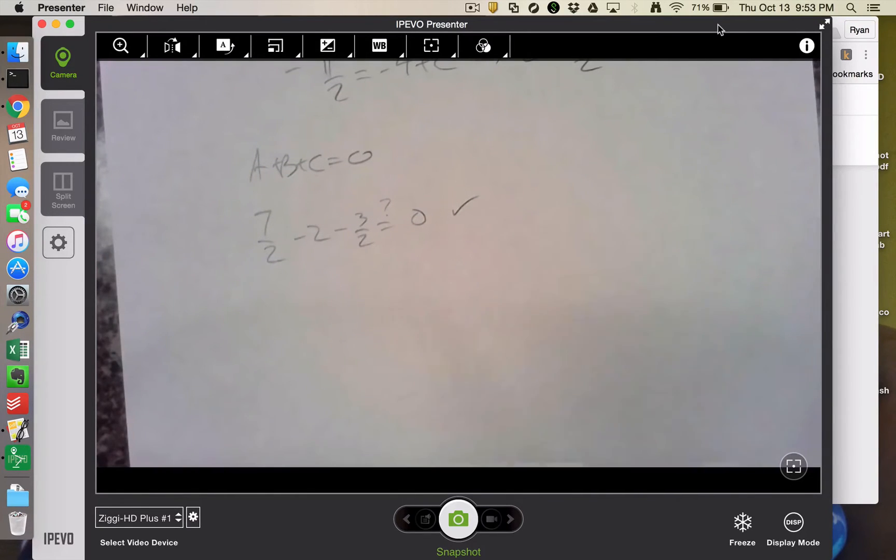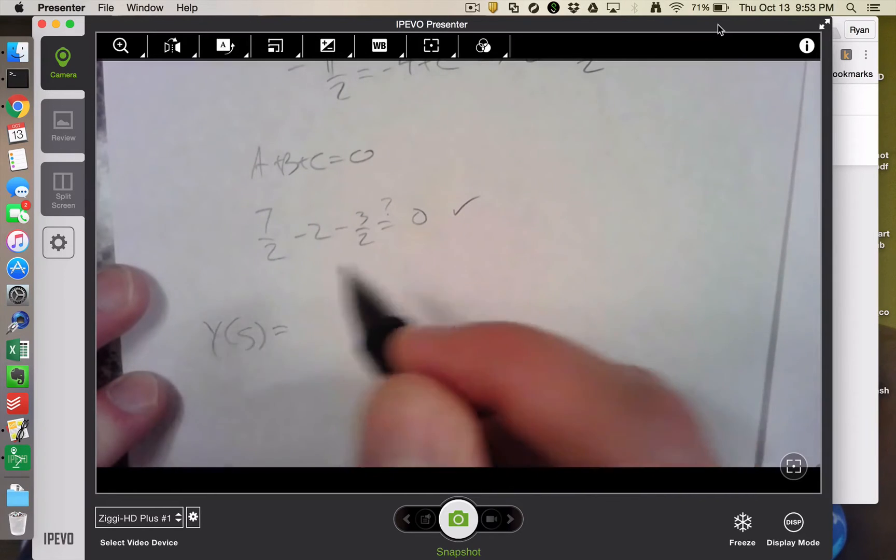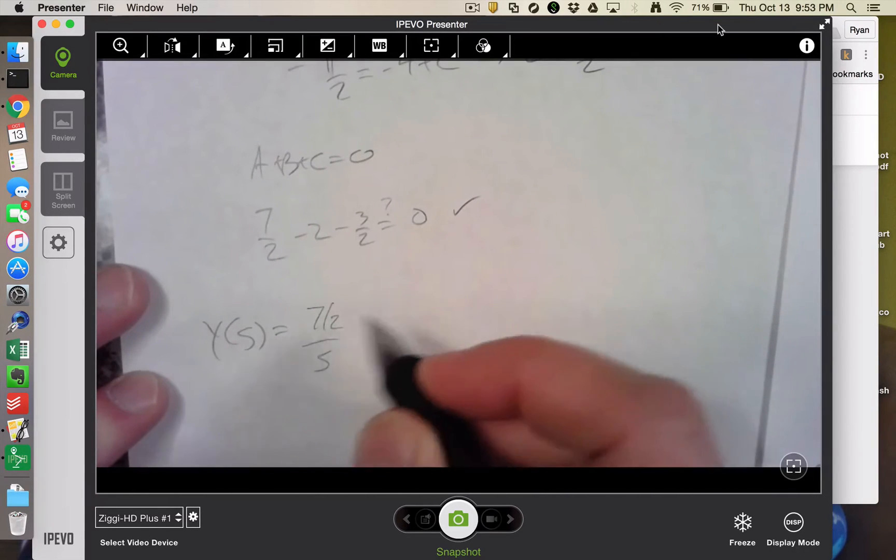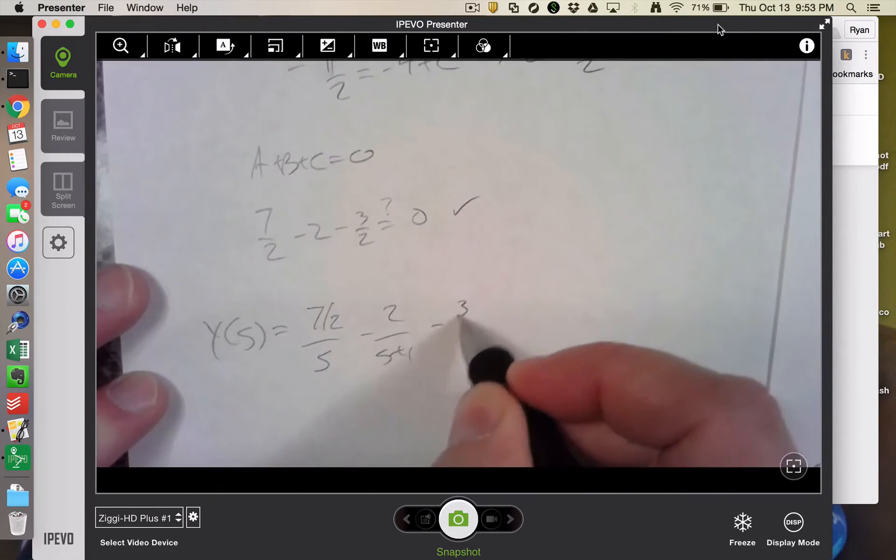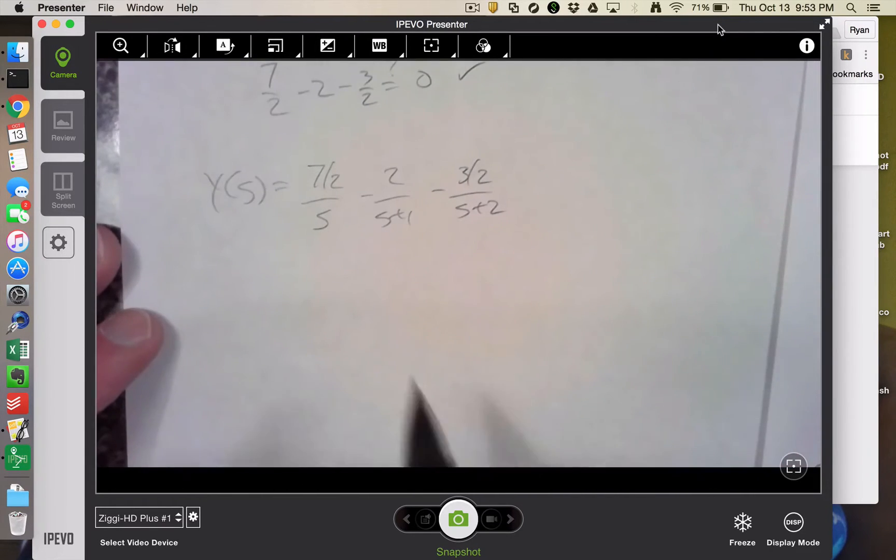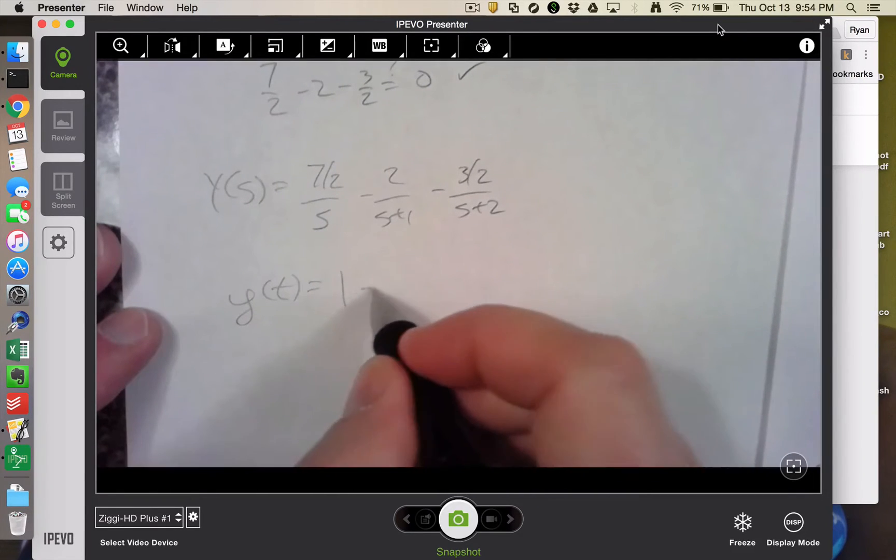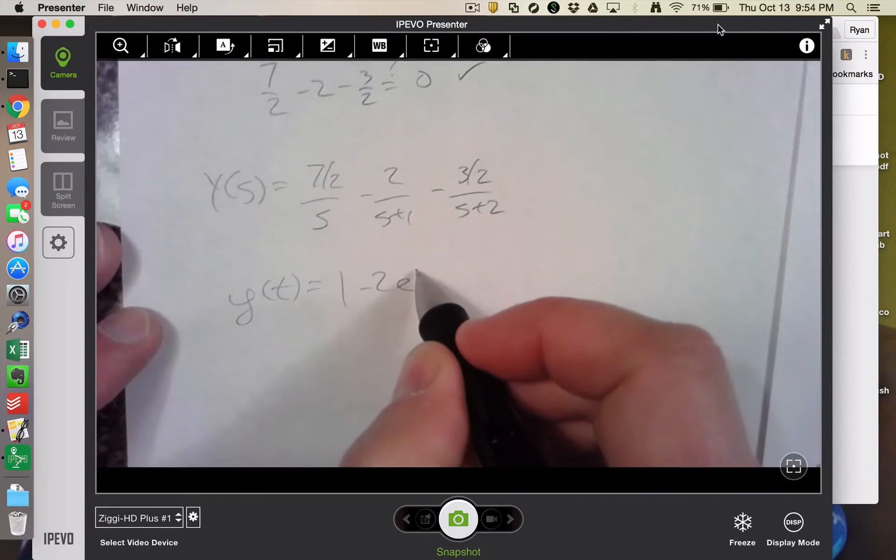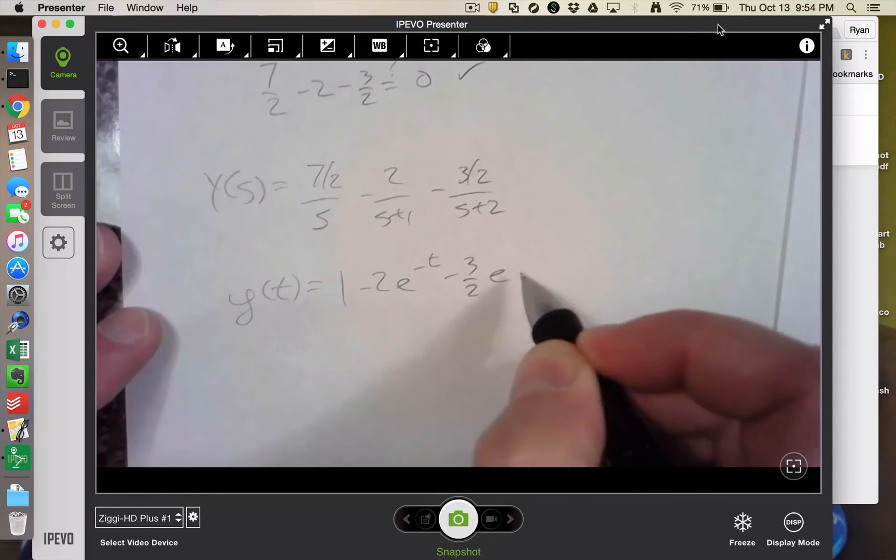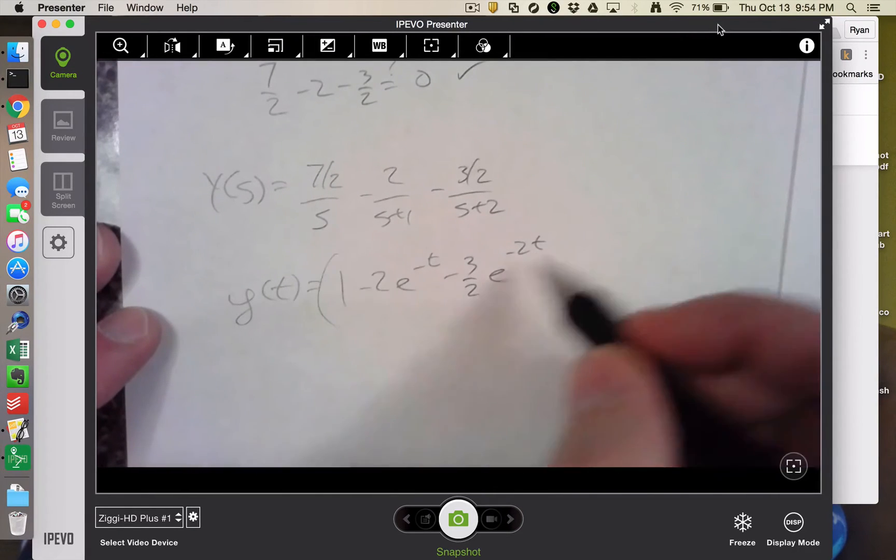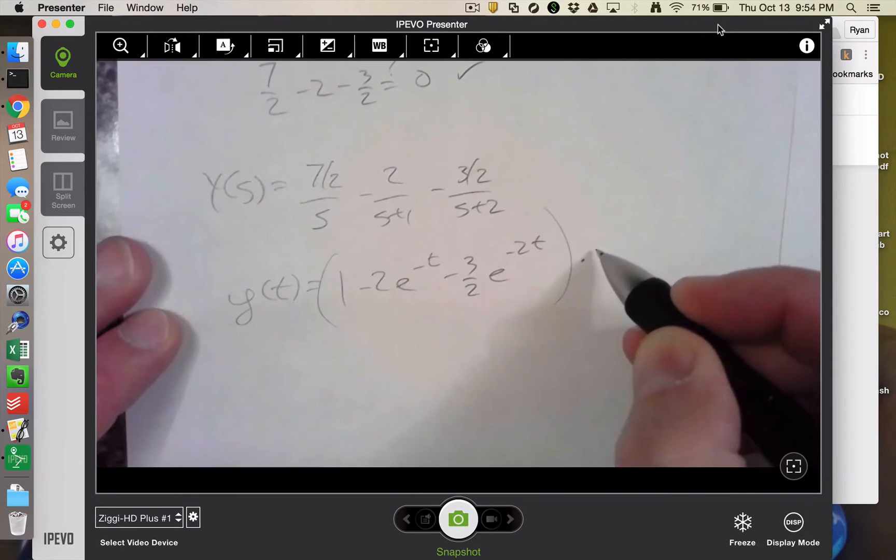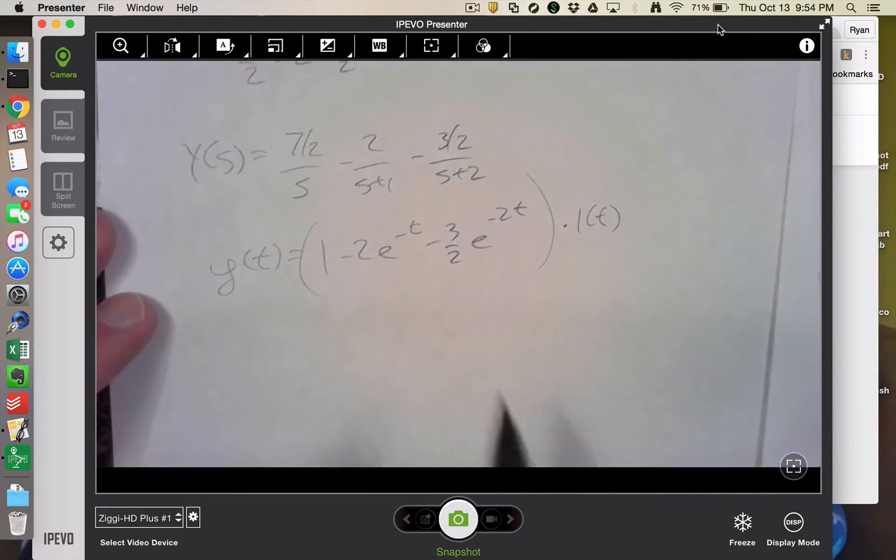And so my claim is that we are saying that y of s is equal to 7 halves over s minus 2 over s plus 1 minus 3 halves over s plus 2, which would lead to a y of t that is 7 halves minus 2e to the negative t minus 3 halves e to the negative 2t. And then it's understood that all of that is multiplied by 1 of t, or it's the equivalent of saying that this is the answer for t greater than or equal to 0 and y is equal to 0 for t less than 0.